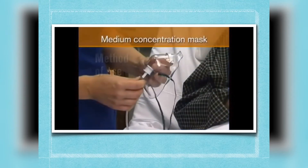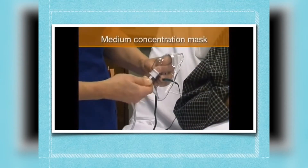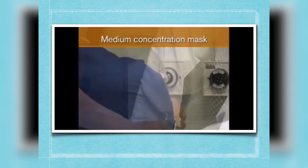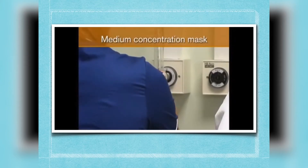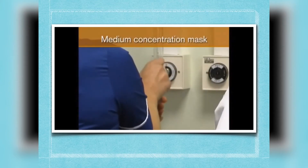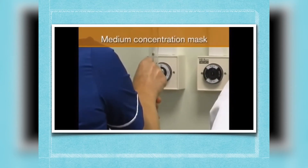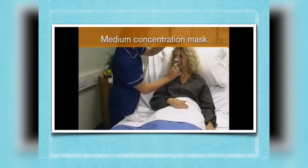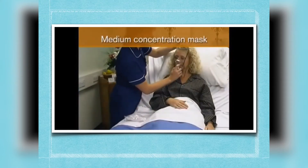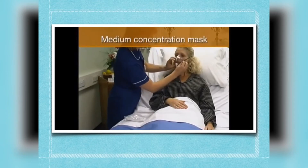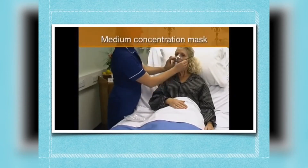One end of the oxygen tube is attached to the spigot on the mask, and the other to the oxygen flow meter. The flow meter is set to give the prescribed oxygen concentration. The mask is then fitted over the patient's nose and mouth, and the elastic tightened to give a secure, comfortable fit.